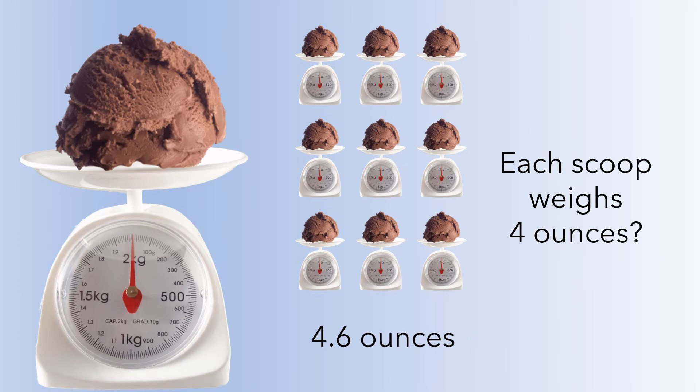You would expect there to be a bit of variation from scoop to scoop — some are going to be a little larger than the average, and some are going to be a little smaller. And since you only got 10 scoops, you would also expect some variation from one 10-scoop sample to another. So you'd need to know how much sampling variation there is.